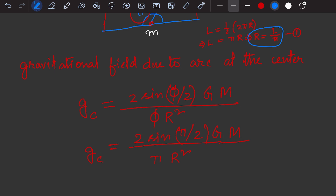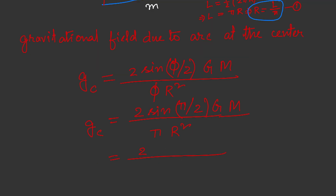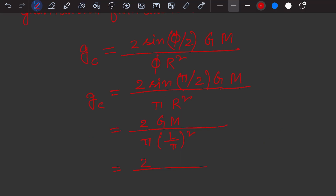Using sin(π/2) = 1, the expression becomes 2G·M divided by π·R². Now substituting R = L/π from equation one, we get R² = (L/π)². Placing this in the formula: 2GM / (π × (L/π)²). Simplifying, one factor of π cancels and π comes to the numerator, giving gravitational field E = 2GMπ / L². This is equation number two.